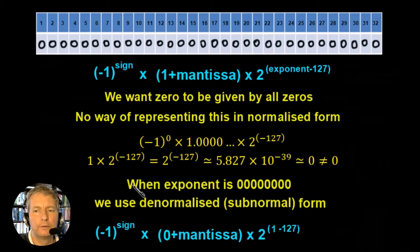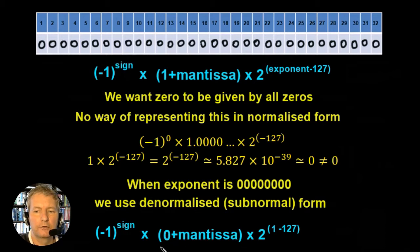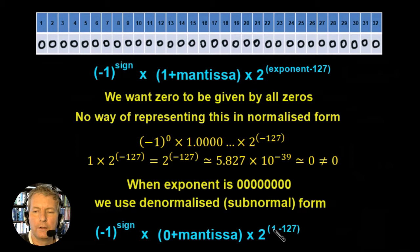So what we do is we introduce something called the subnormal form. Whenever all of the exponent values are zero — the exponent is given by eight zeros — we introduce the subnormal form. The subnormal form is written like this: the sign remains the same, the mantissa is different because we don't have the plus 1, we just leave that as zero, and the bias changes. Instead of being the exponent minus 127, it's going to be 1 minus 127, which is effectively minus 126.